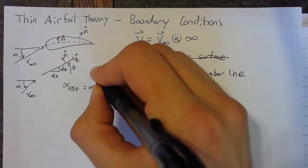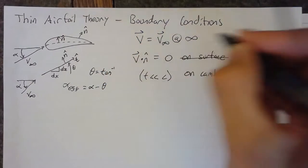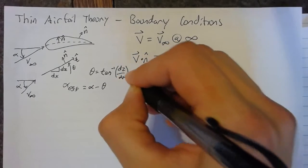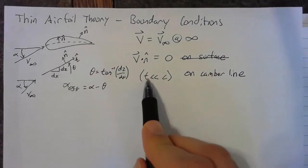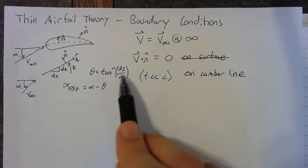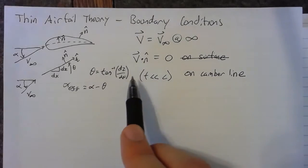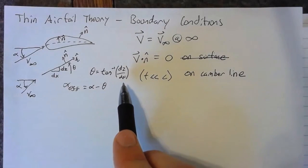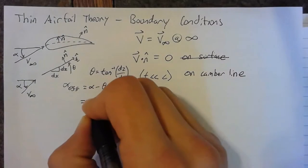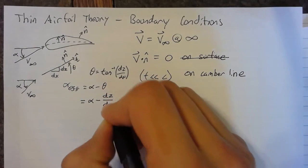So our theta can be simply defined as the arc tangent of our slope, dz by dx. However, since we're using this approximation that our thickness is much less than our camber line, we can ignore the entire arc tangent part and just say that theta is equal to dz by dx. So, we're instead going to say that the alpha effective is equal to alpha minus dz by dx.